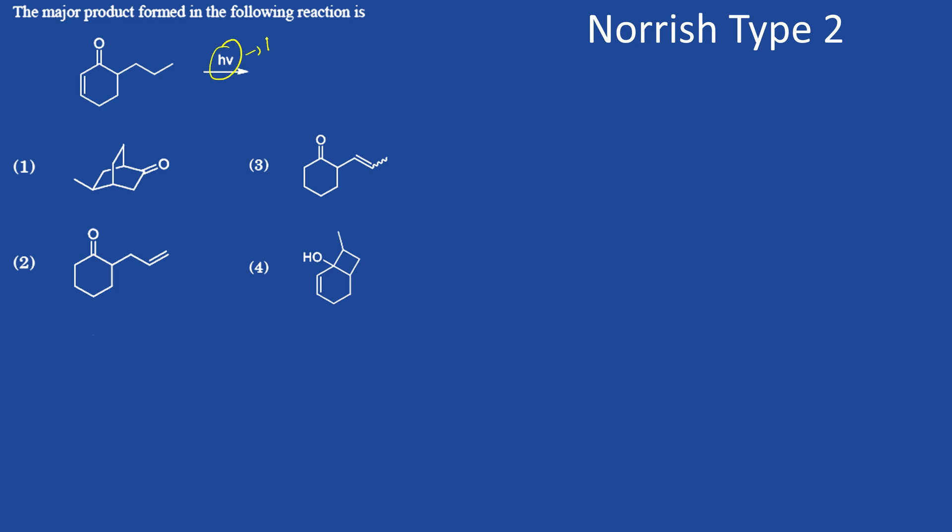So we can draw like this. The Norrish Type 2 reaction is like so: here alpha, beta, gamma - here alpha, beta, gamma. This gamma hydrogen will be abstracted first.